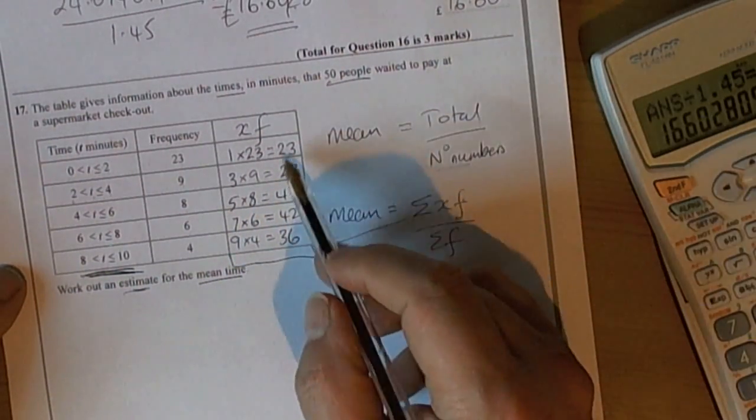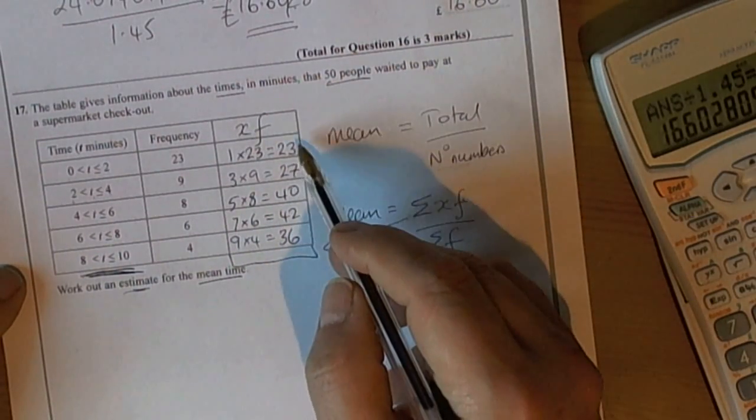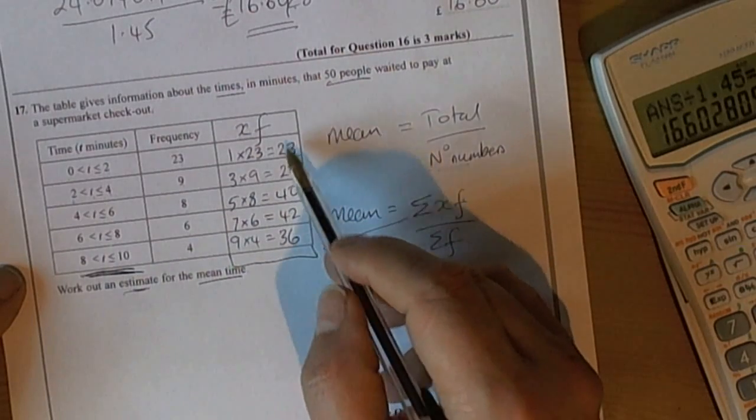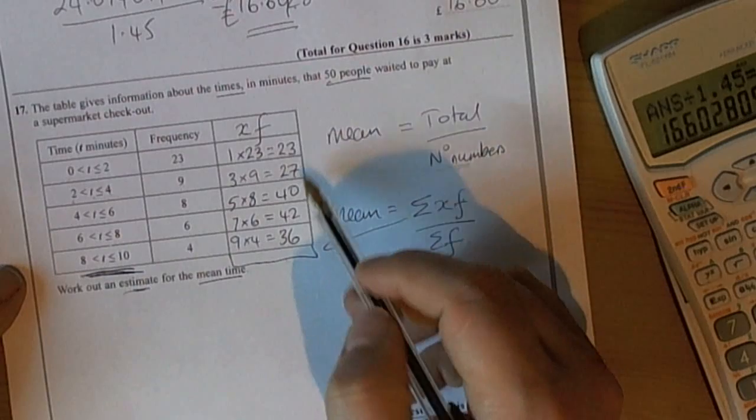We then add up these numbers. Now, it's a calculator paper, so the best thing to do is use your calculator. Although you should be able to do it in your head, don't risk it. Do it twice in your calculator and check you get the same number twice.